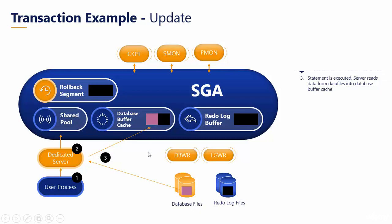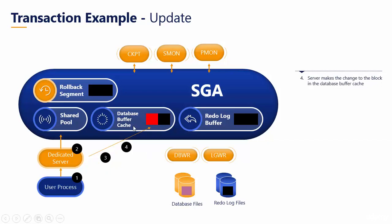In the fourth step, the server makes the change to the block in the database buffer cache. Since we wanted to change the name to John, this is the block which needs to be updated, and the server made the changes to the block in the database buffer cache.